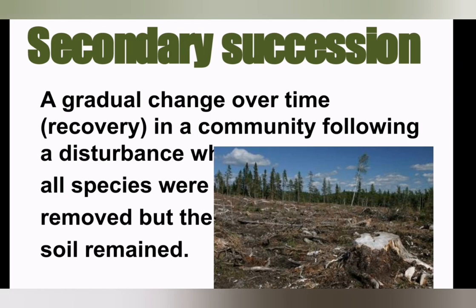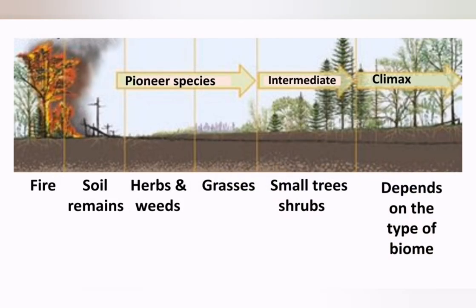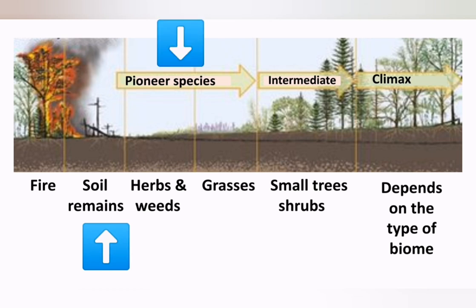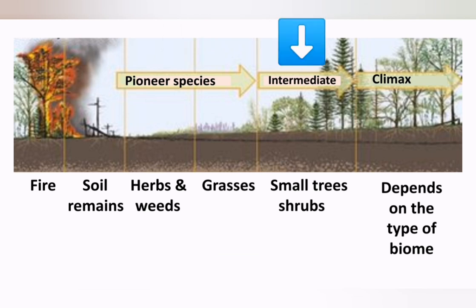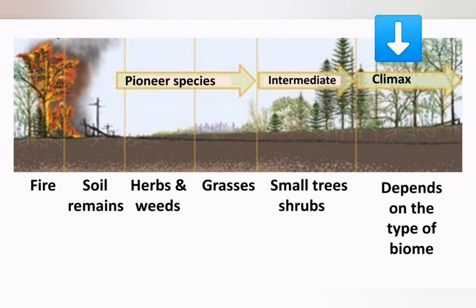Once a fire occurs, you do have soil remaining, so the pioneer stage looks very different. You will quickly have herbs and weeds growing — there is no need for lichen because rocks don't need to be broken. After the herbs and weeds, grasses grow, which brings us to the intermediate stage with small trees and shrubs, followed by the climax community. What that climax community looks like depends on the type of biome — in a forest scenario it would be large trees.